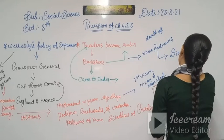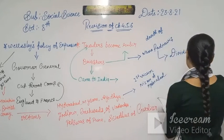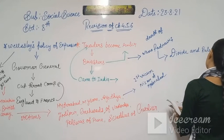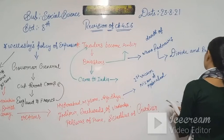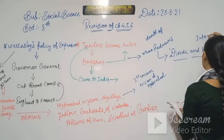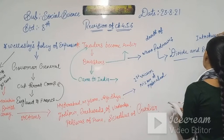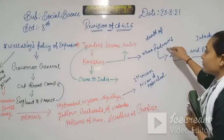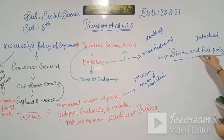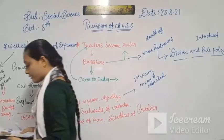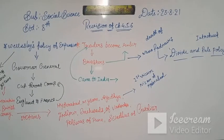That was a divide and rule policy introduced. After the death of Nana Phadnavis, the policy of divide and rule was introduced. Where was this policy introduced? After the death of Nana Phadnavis, the policy of divide and rule was introduced. Within the span of seven years, Wellesley expanded the company's rule.